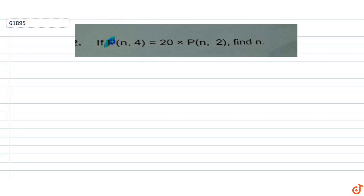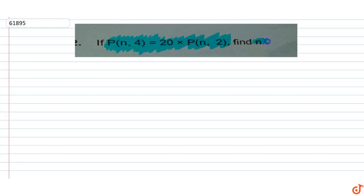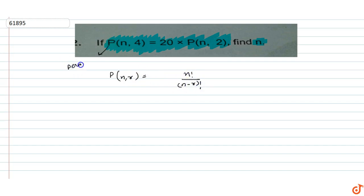The question given is P(n, 4) equals 20 into P(n, 2). We have to find the value of n. P(n, r) equals n factorial upon n minus r factorial — that is the permutation formula.